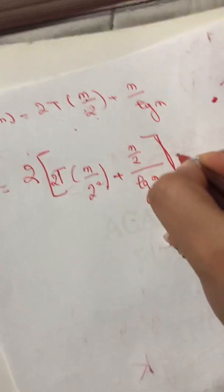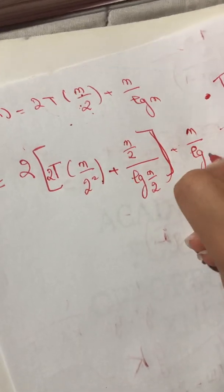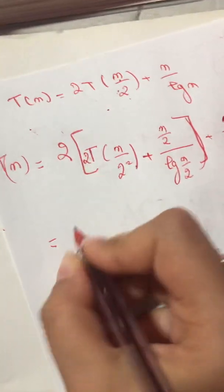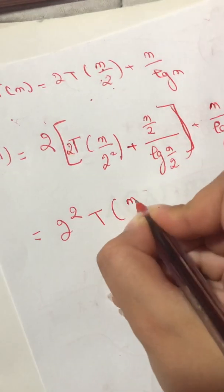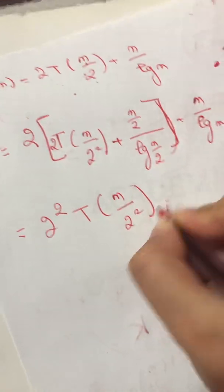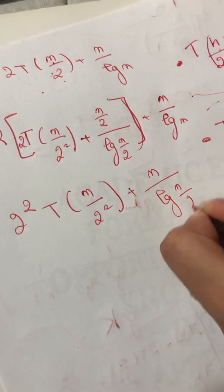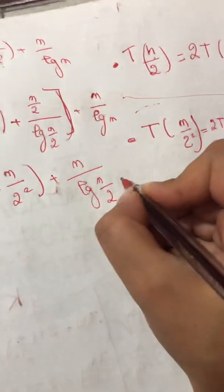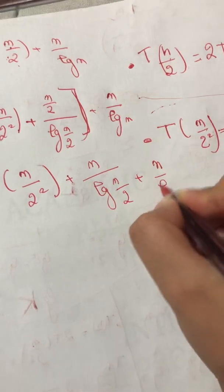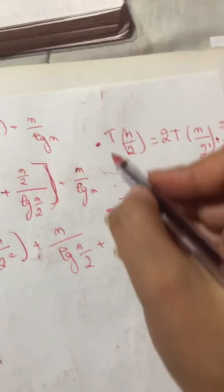So it equals 2^2 T(n/2^2) plus n log(n/2)/2 plus n log n. I will separate these things.